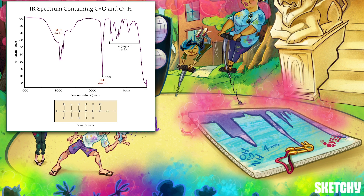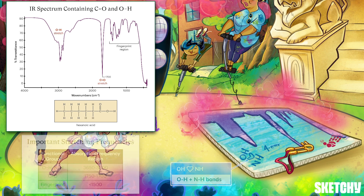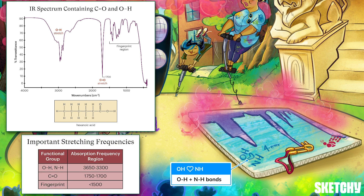Now for the specific peaks. NH and OH bonds — from alcohols, amines, carboxylic acids, or amides — give very broad peaks usually around 3300 wave numbers. The OH heart and NH graffiti shown as a broad mountain on the left of the canvas should help you remember this.